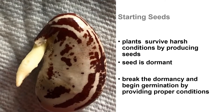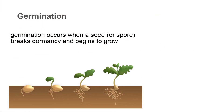A seed is dormant — it's the plant's way to keep its embryos safe during adverse conditions, such as drought or cold temperatures. You need to break the dormancy and begin germination by providing the conditions that the embryo needs to grow and flourish. Germination occurs when a seed or spore breaks dormancy and begins to grow.